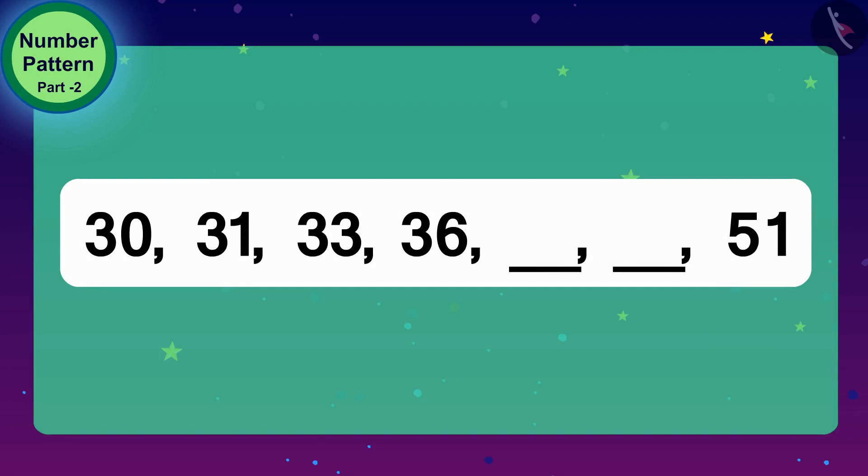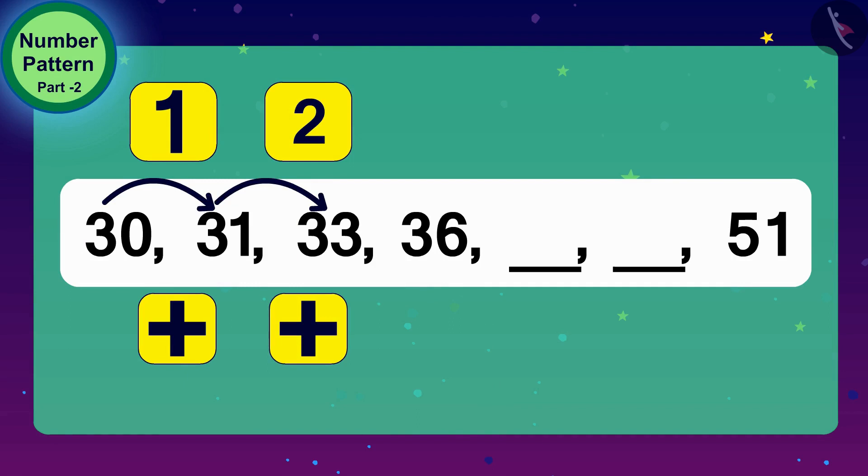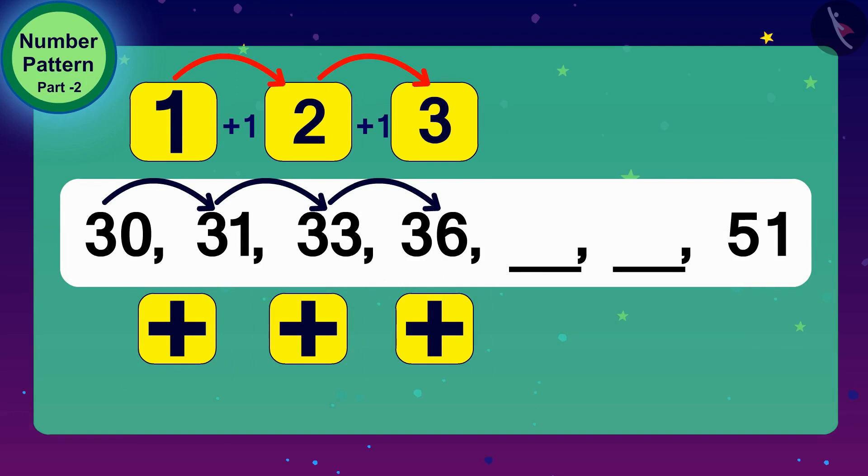What would we do if we had to reach from 30 to 31? Exactly! We will add 1 to 30. And what do we have to do to get 33 from 31? Yes! We have to add 2. And finally, if we have to reach 36 from 33, what will we do? 3 will be added to 33. Children, you can see that the number being added every time is increasing by 1 to get the next number in this number pattern. So, what kind of pattern is this number pattern? Quite rightly, this number pattern is a growing pattern.